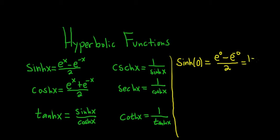So you get 1 minus 1 over 2, so you get 0 over 2, so you just get 0. The hyperbolic sine of 0 is equal to 0.